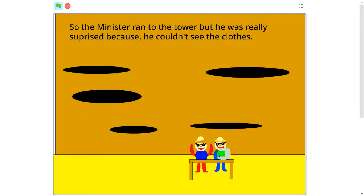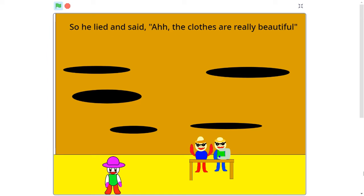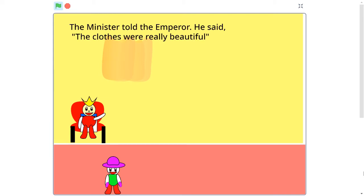So the minister ran to the tower. But he was really surprised, because he couldn't see the clothes. So he looked and said, 'The clothes are really beautiful!' The minister told the Emperor, 'The clothes were really beautiful!'